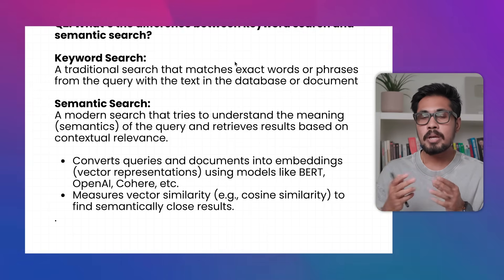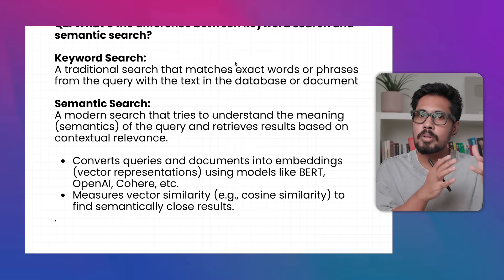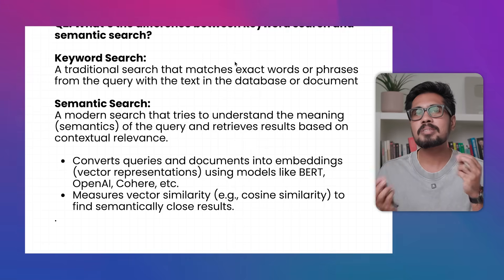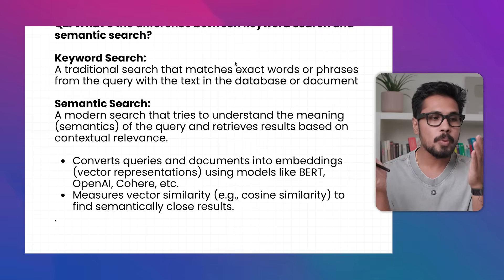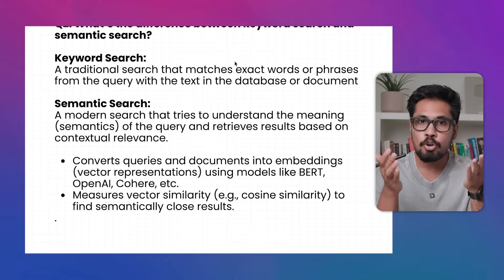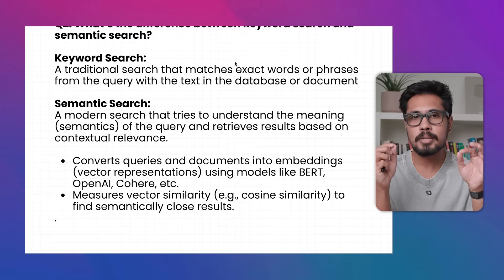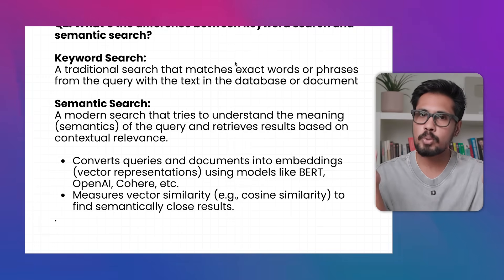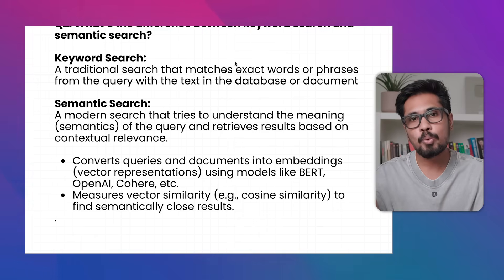Semantic search is not about matching similar words — it's about finding similar meaning. We try to identify the similar meaning between sentences. The words may be different, but the meanings share similarity. We call it similarity search, and we perform it using cosine similarity. To do that, you need to transform text data into embeddings, which are generated with the help of a self-attention mechanism.